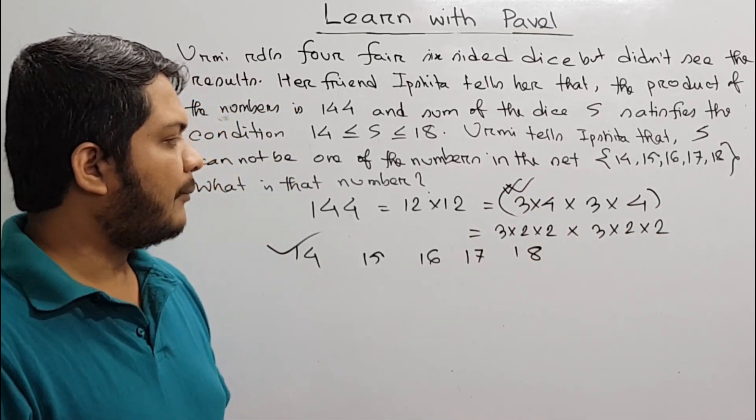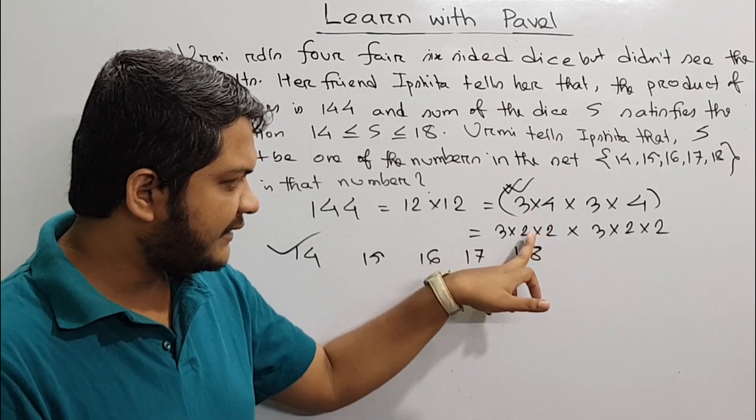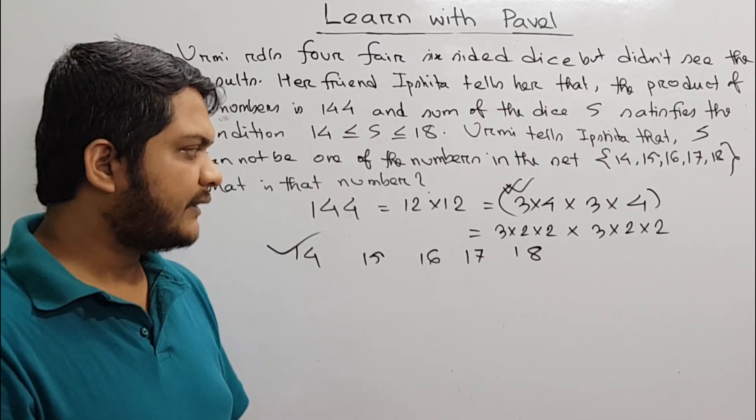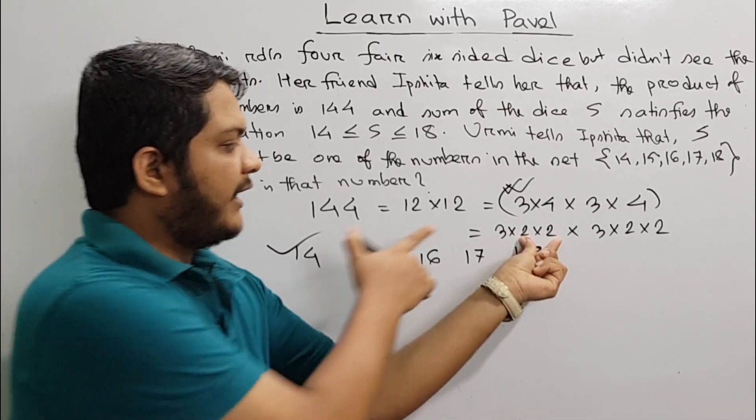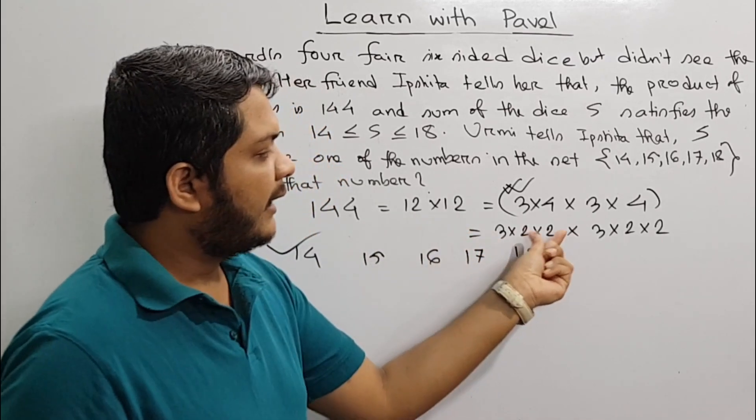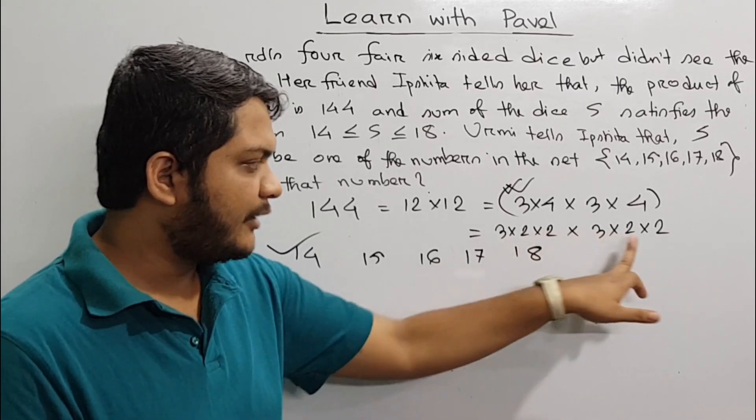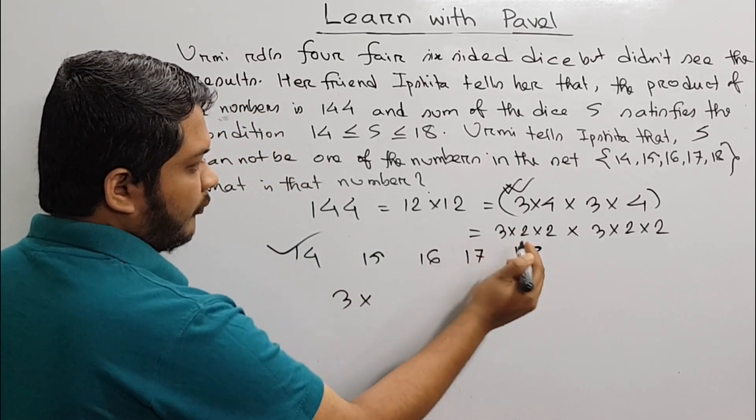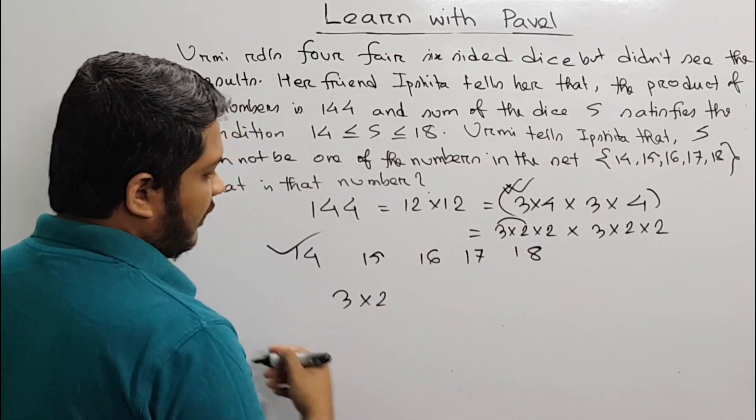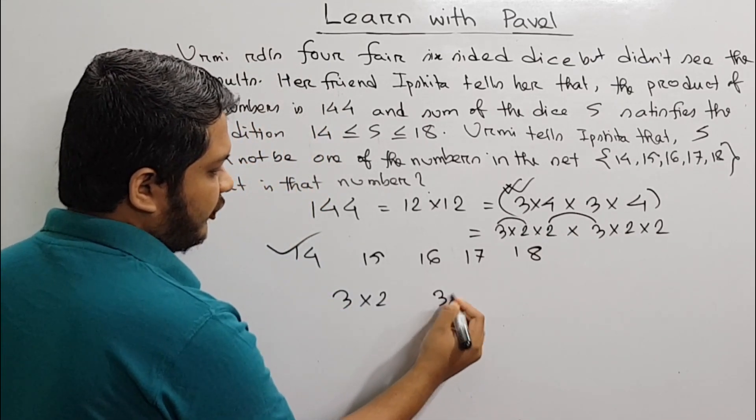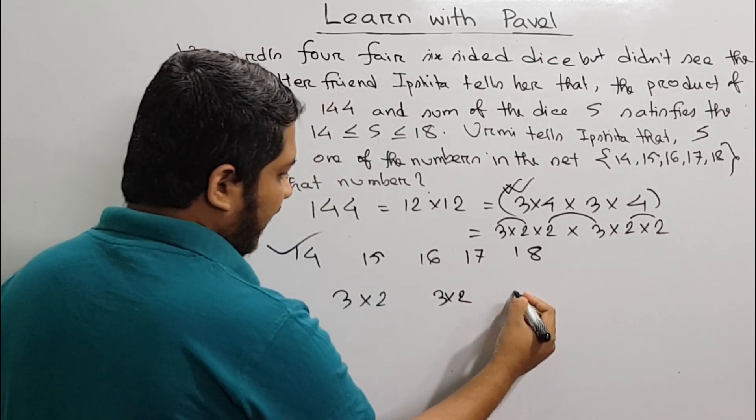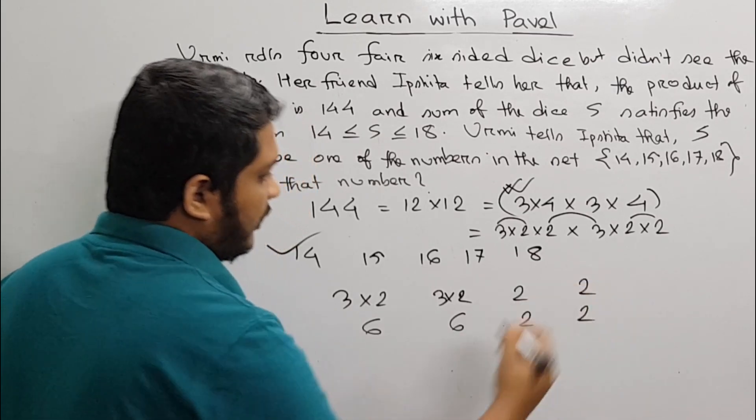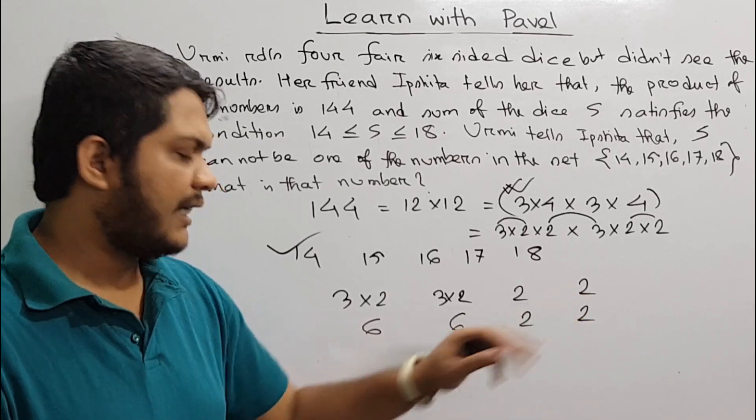Now, the question is if we have 2s to multiply. So if we have 2s, we have 4. When we have 2s, we multiply 3×2, 3×2. We get 3×2, which is 6, 6, 2, 2. We can check if 6, 6, 2, 2 gives us the sum.